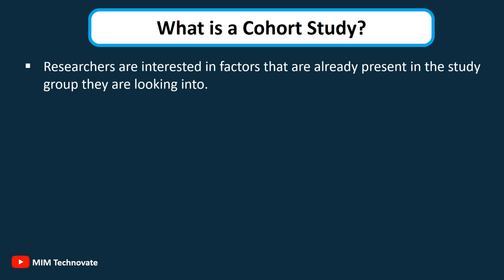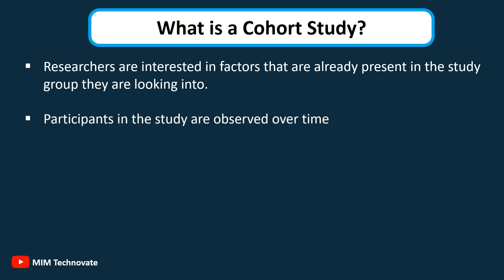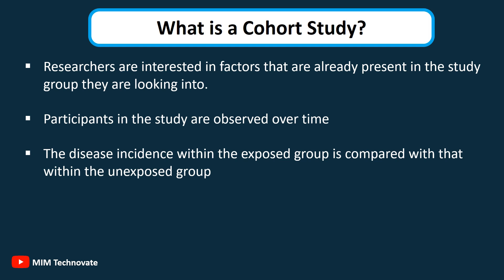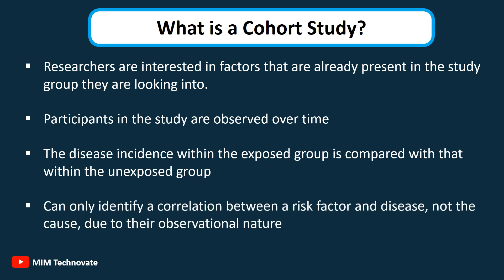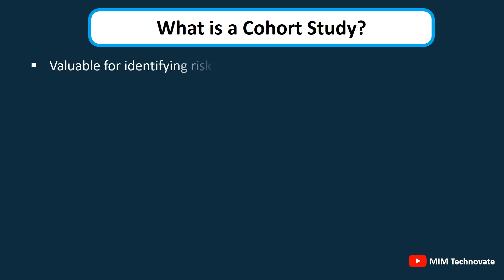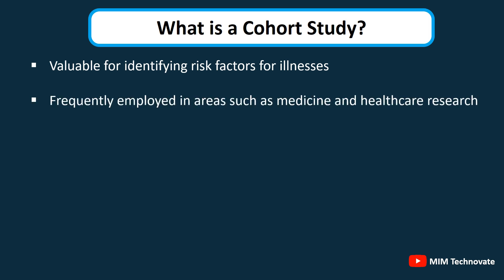Researchers are interested in factors that are already present in the study group. Participants are observed over time, and the disease incidence within the exposed group is compared with that within the unexposed group. Cohort studies can only identify a correlation between a risk factor and disease, not the cause, due to their observational nature. They are valuable for identifying risk factors for illnesses and frequently employed in medicine and healthcare research, since they can assist researchers in identifying effective methods to help prevent or treat disease.